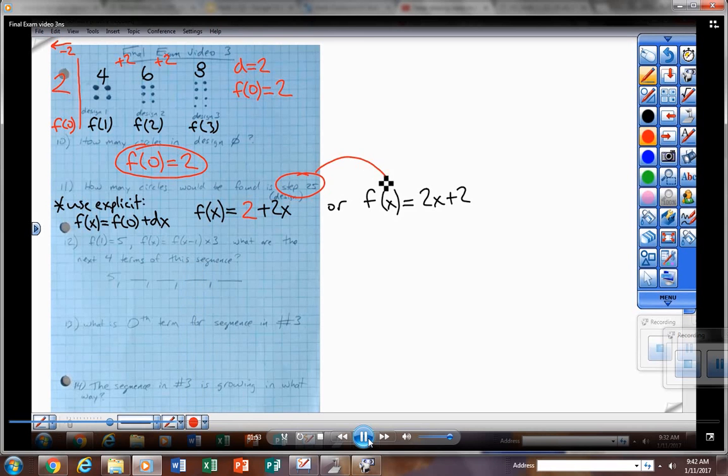Plugging in 25 right there is just the function notation that just shows me what I'm evaluating for. I'm going to take that 25 and replace it in the x spot over there by 2. That's where I'm actually doing the work. So 2, and then where x is I plug in 25.